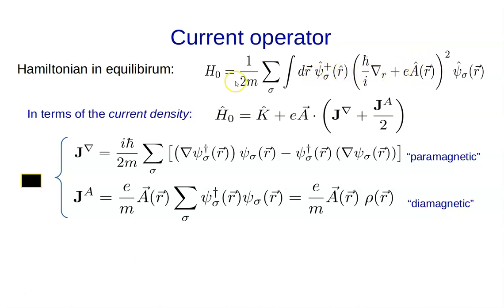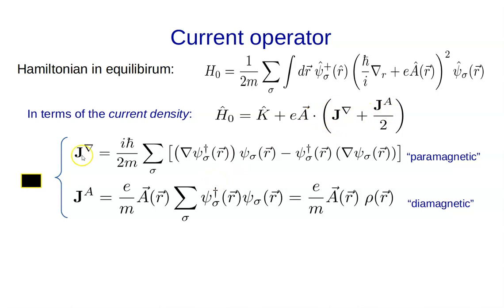We can write this Hamiltonian in terms of the current density operator. If these are the field operators — there should be a dagger here — I can expand this Hamiltonian and I'll get two terms: one that depends on the gradients of the fields (the paramagnetic case) and one that depends only on the density (the diamagnetic case). Let's go to the blackboard to show how these density operators appear and how I can write the Hamiltonian as kinetic energy plus the charge times the vector potential scalar product with the sum of these current densities.